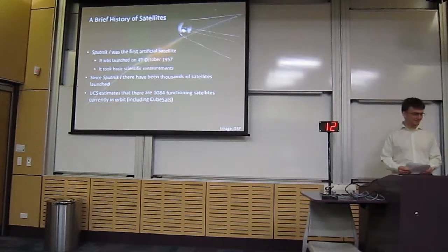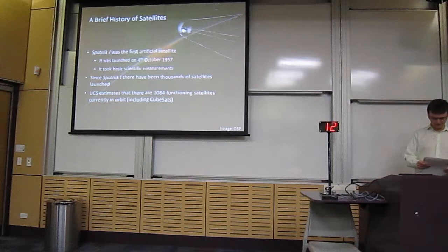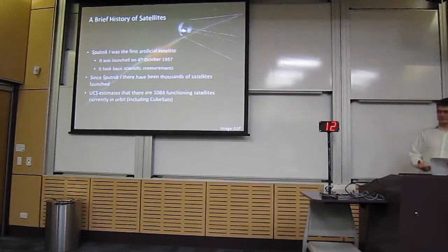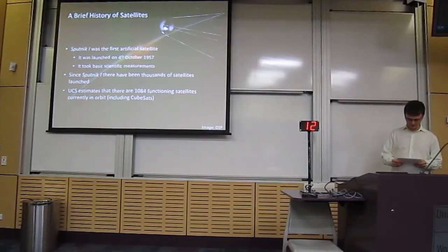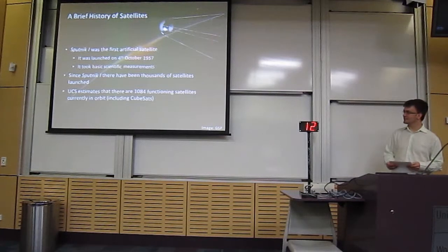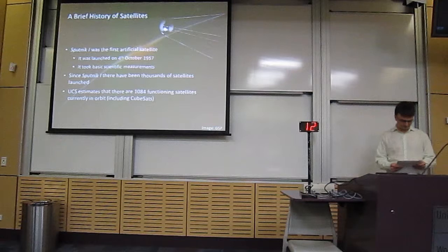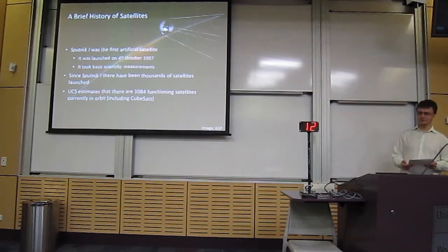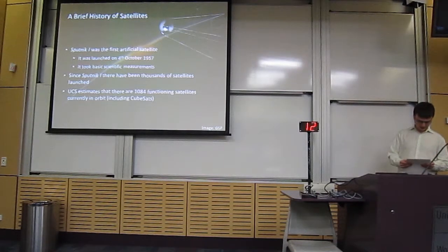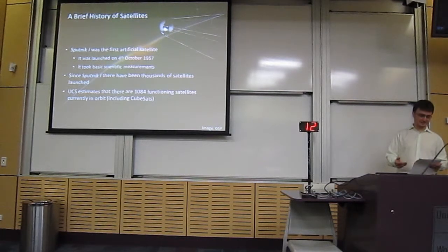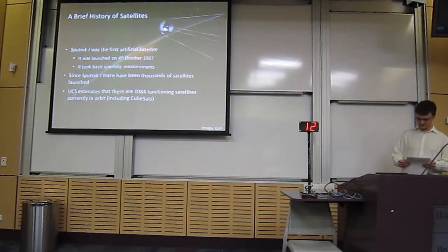I'll start with the brief history of satellites. The Sputnik 1 was the first artificial satellite. It was launched on the 4th of October 1957 and it orbited the Earth for 90 days. It took basic scientific measurements, specifically temperature and pressure readings. Since Sputnik 1 took man into the space age, there's been thousands of satellite launches.